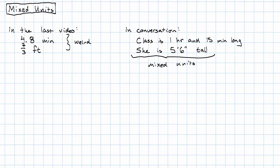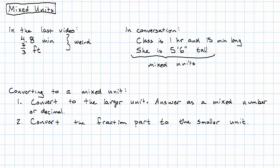Okay, so here's how we convert to a mixed unit. If we want to get a mixed unit, first we convert to the larger unit. We will get either a mixed number or a decimal. If we get a whole number, we didn't need a mixed unit. We can just use the larger one. Then we'll convert the fraction part to the smaller unit.